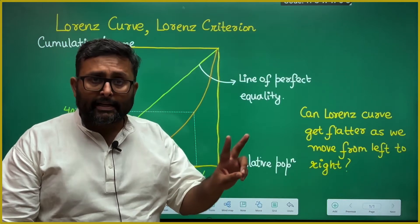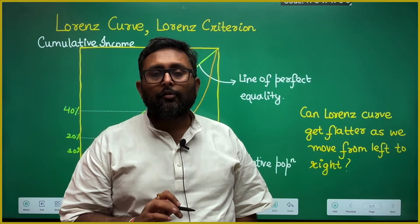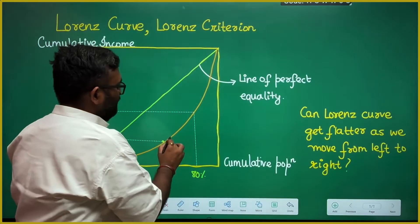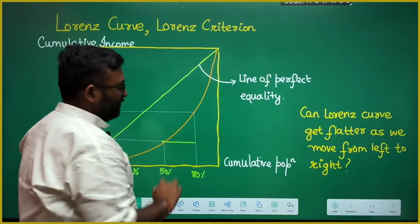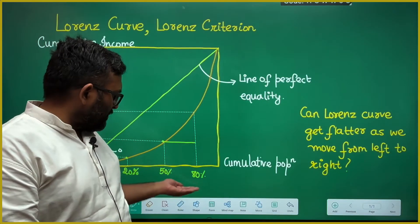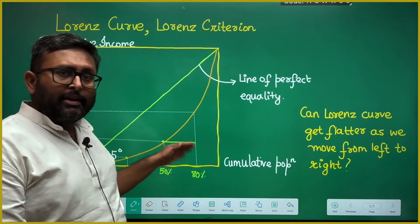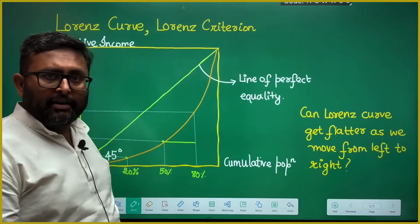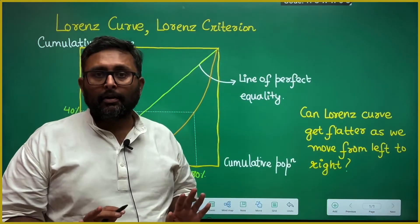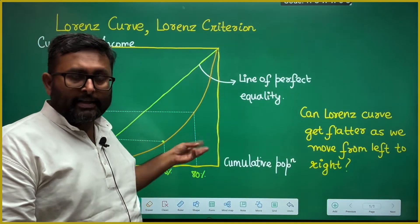The Lorenz curve cannot even get flat. Flat would mean that — supposedly it becomes flat between 50% and 80% of the population. Is it possible that 30% of the population lying from 50% to 80% has not earned any income? No, that is not possible. So the Lorenz curve also cannot get flat, and it cannot bend downward.